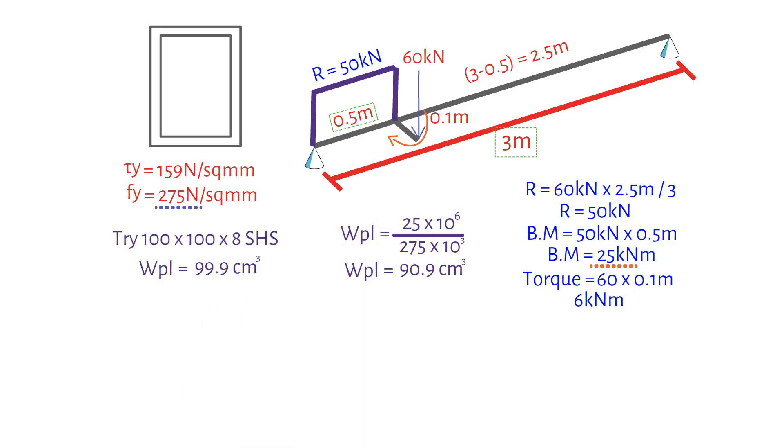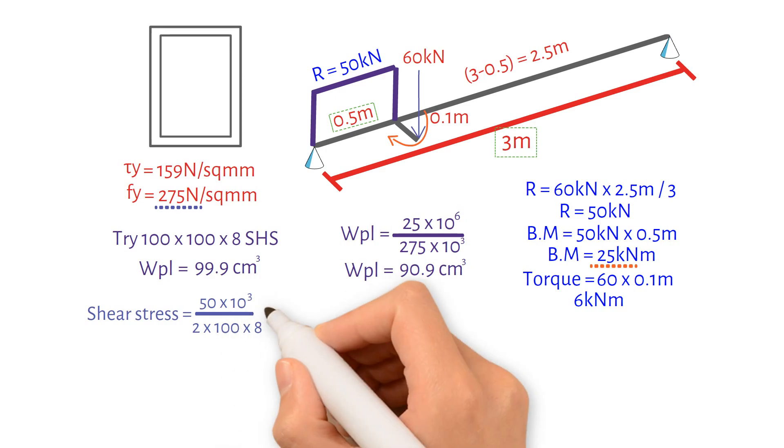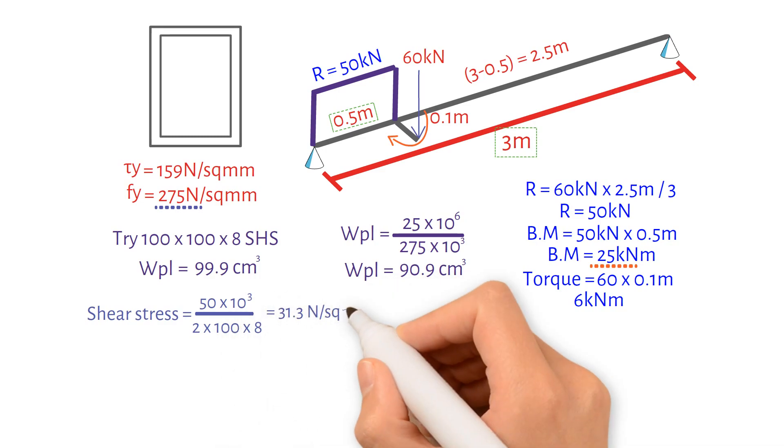Next, we will calculate the shear stress from bending by using the average value on the web, which is 50 kN times 10 to the power of 3 divided by 2 times 100 times 8, resulting in 31.3 N per square millimetre.